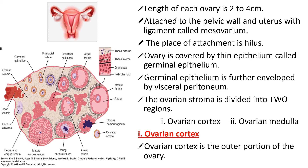These ovaries are attached to the pelvic wall and uterus with a ligament called mesovarium. This muscular fibrous thread-like structure is called mesovarium. With the help of mesovarium, ovaries are attached to the uterus as well as to the pelvic wall. The mesovarium keeps the ovaries in their position constantly. The place of attachment is called the hilum — where the ovaries are attached is called the hilum.